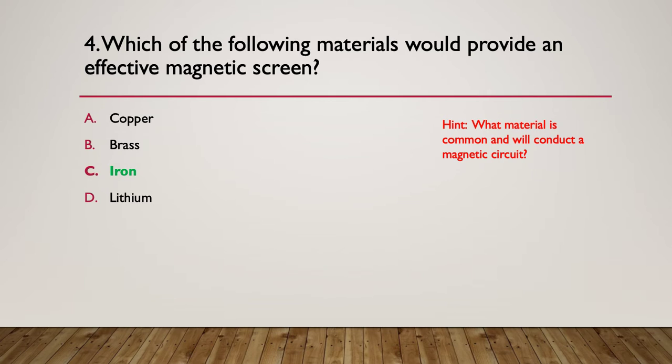The answer is iron. Copper will conduct an electrical current but not a magnetic circuit. The same with brass. Iron will conduct both an electrical current and a magnetic field. And lithium, as a metal, will not conduct any magnetic fields, but it will conduct an electrical field.